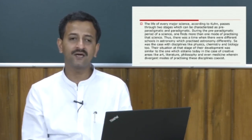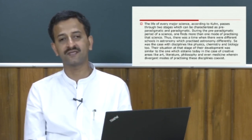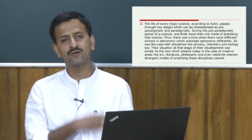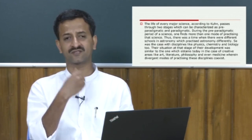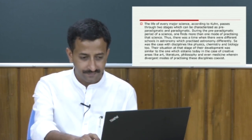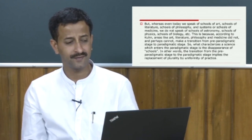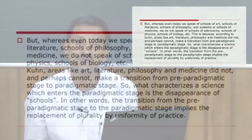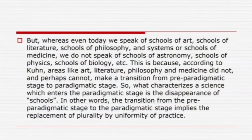That is why even today we speak of schools of art, schools of literature, schools of philosophy, and systems or schools of medicine. We do not speak of schools of astronomy, schools of physics, schools of biology. According to Kuhn, areas like art, literature, philosophy and medicine did not and perhaps cannot come to a point of convergent thinking — cannot make a transition from the pre-paradigmatic stage to the paradigmatic stage.